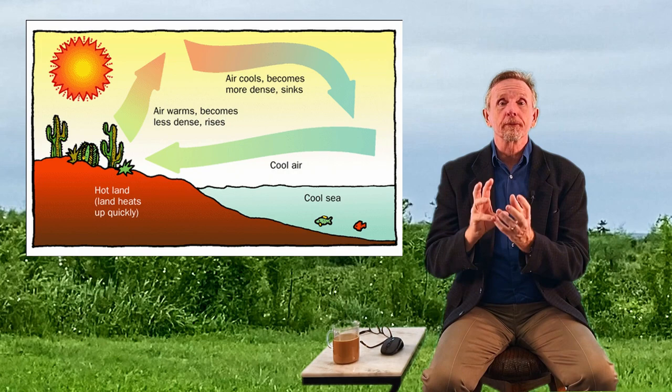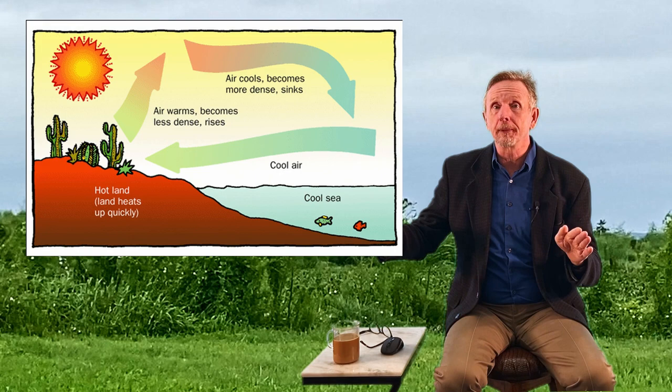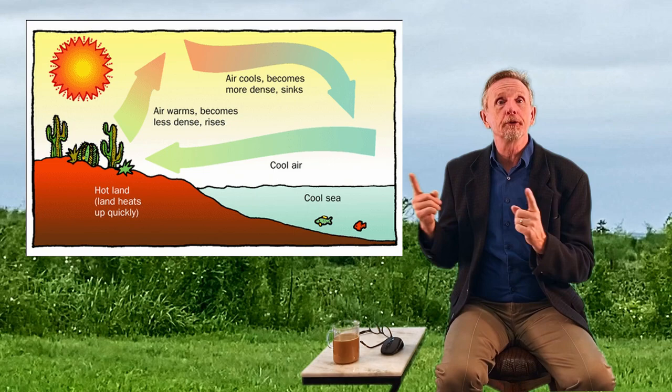Solar energy warms the ground, which warms the air above it. That warm air rises, cool air moves in to replace it, and we get a convection current — these big convection currents we call wind. Because the Earth is rotating, and different latitudes get different amounts of solar energy, we get large global atmospheric circular currents. This circulation pattern determines our precipitation pattern.